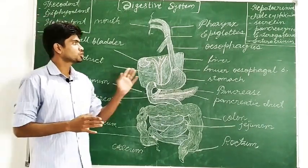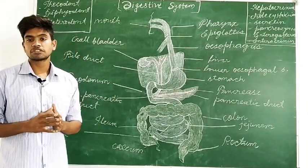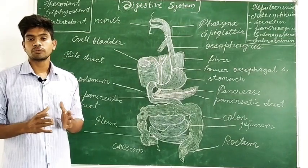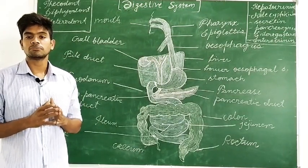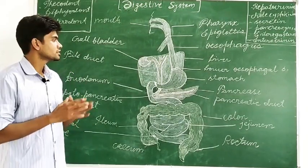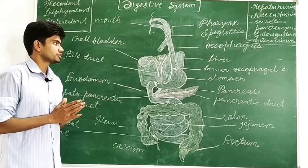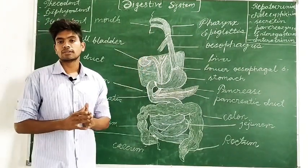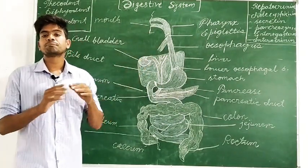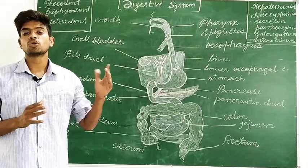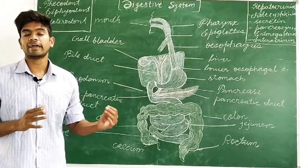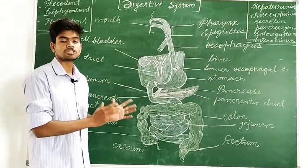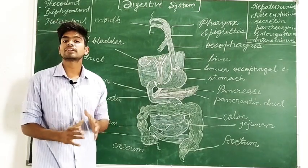Now, it is the alimentary canal which plays a very important role on which the whole digestive system is supported. This alimentary canal is a kind of pipe which starts from your mouth and ends at your anus. This whole pipeline is called the alimentary canal.